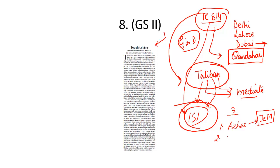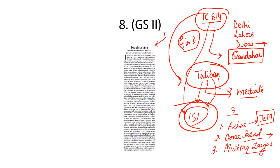The second person released was Omar Saeed Sheikh, who is now in prison in Pakistan for killing American journalist Daniel Pearl. The third was Mushtaq Ahmed Zargar, a Kashmiri terrorist who later founded Al-Umar Mujahideen, which has been waging a proxy war against India. The entire IC 814 episode proved to be a diplomatic blunder for India, illustrating why government-to-government relationships should be cordial to avert such disasters.